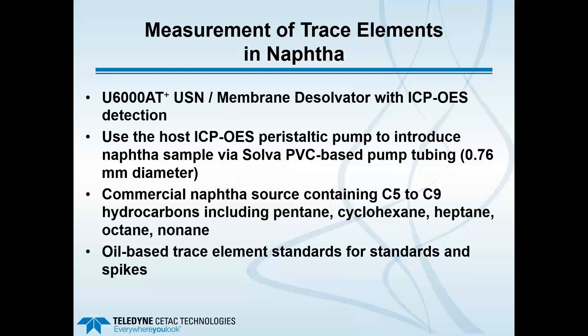For the measurement of trace elements in NAFTA, we use the U6000 AT+ with the host ICP-OES peristaltic pump to introduce the NAFTA sample using Salva PVC-based pump tubing, which is resistant to hydrocarbons. The commercial NAFTA source contains a mixture of C5 to C9 hydrocarbons — pentane, cyclohexane, heptane, octane, and nonane. Oil-based trace element standards are used for making up standards and spikes.